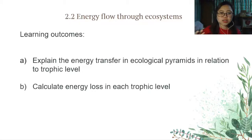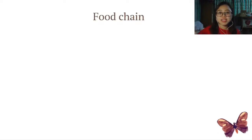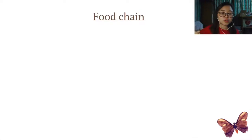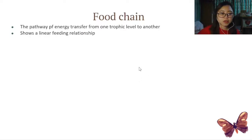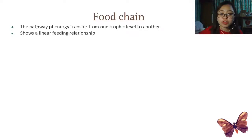Those are the learning outcomes and they're the more complicated part of the subtopic, but we're actually going to start by looking at something very familiar to you — something you've learned in middle school and even in primary school. We're going to be talking about the food chain, which describes the pathway of energy transfer from one trophic level to another and shows a linear feeding relationship.